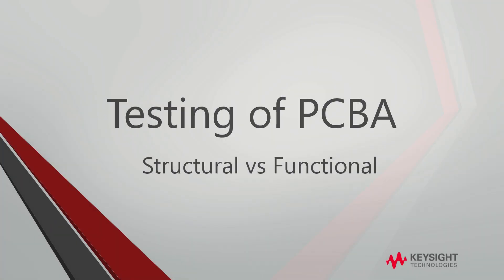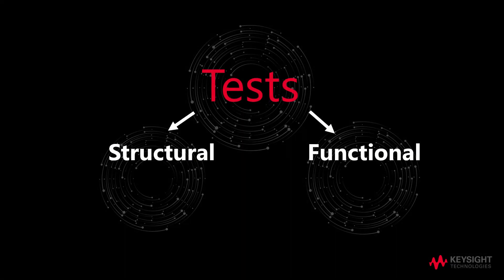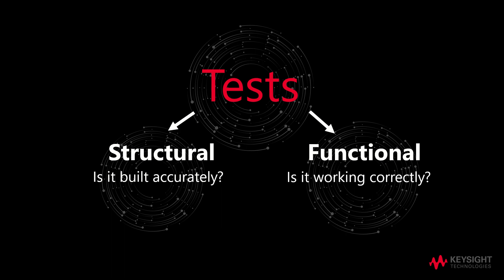Now, let's discuss the testing of PCBA, specifically the Structural and Functional Test. When we talk about Structural Test, we will focus mainly on whether it is built accurately — that is, whether the components are placed correctly, and to ensure there are no manufacturing defects like opens or shorts. On the other hand, when we talk about Functional Test, we will be focusing on whether it is working or functioning correctly.